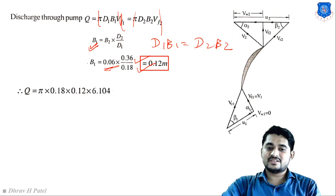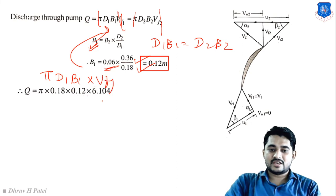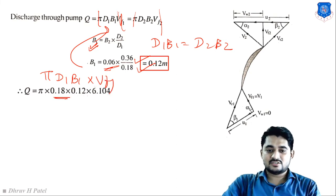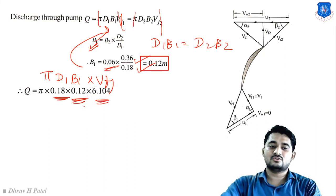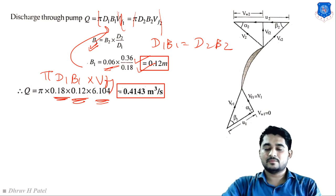Discharge Q = π d1 B1 V_f1 = π × 0.18 × 0.12 × 6.104 = 0.4143 m³/s.